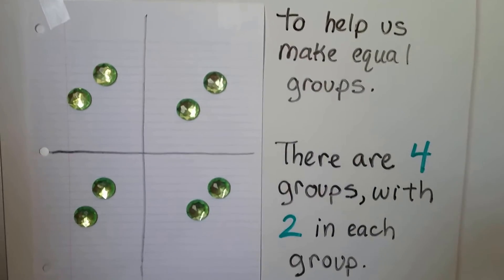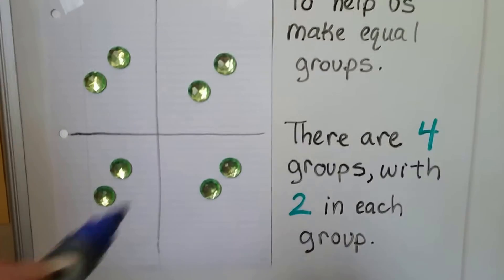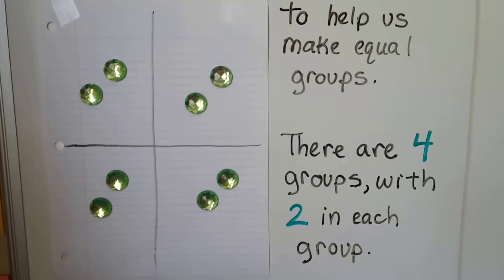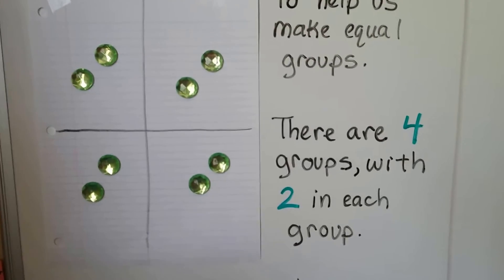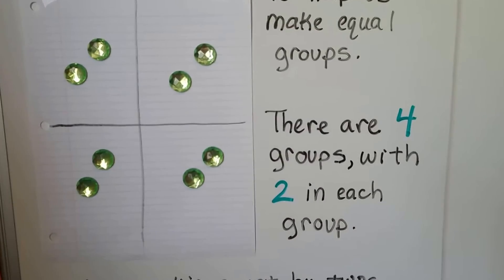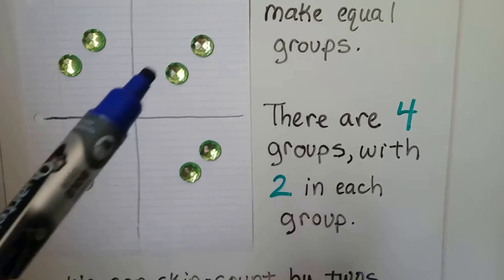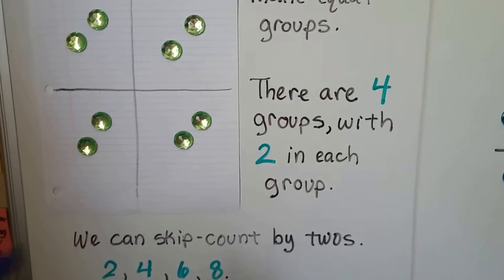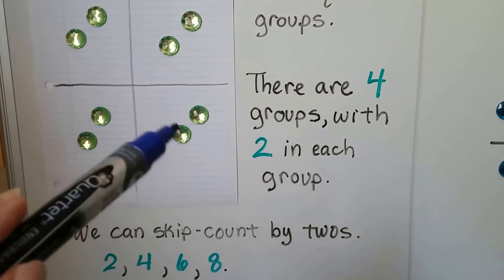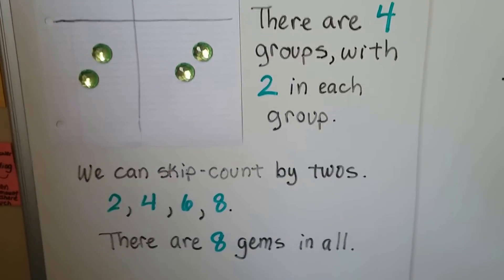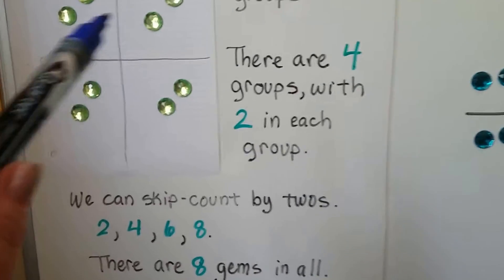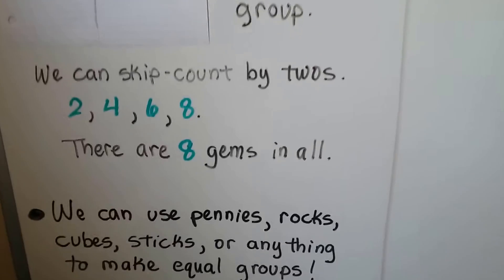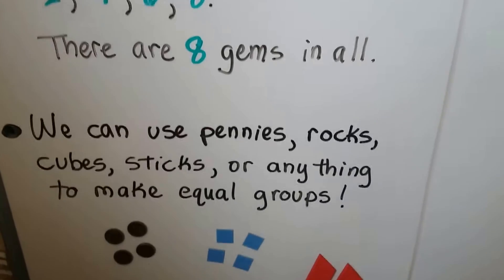We can use a piece of paper with four sections — a line going down and a line going across — to help us make equal groups. Here we have one, two, three, four groups and there are two in each group. We can skip count by twos: two, four, six, eight.